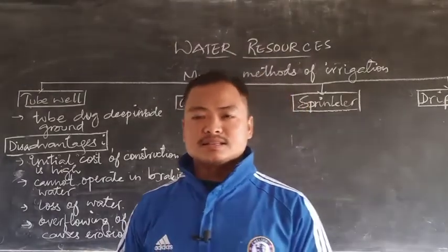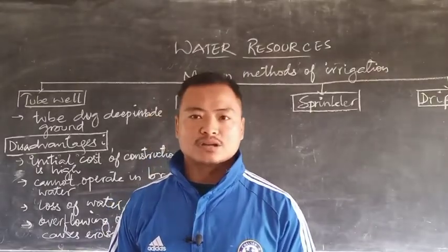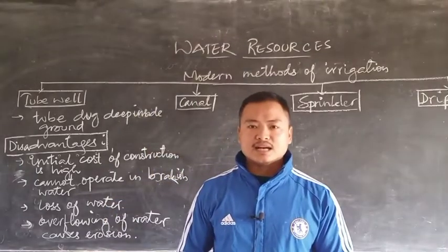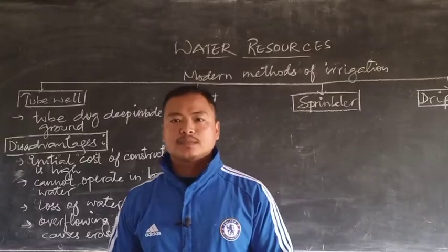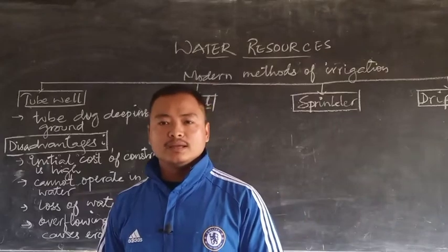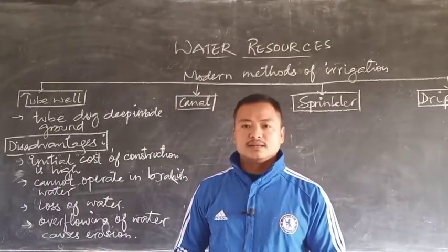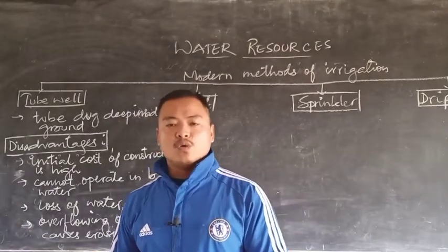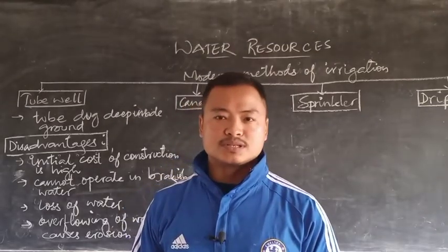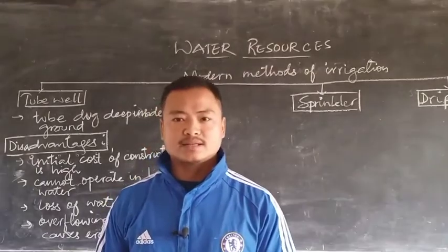There are also factors to understand for the construction of tube wells. Tube wells cannot be constructed everywhere — for example, in South India where the rocks are of igneous origin, tube wells cannot be actively operated. The construction of tube wells requires soft soil and a high water table, meaning a high level of underground water, for tube well operations to be effective.